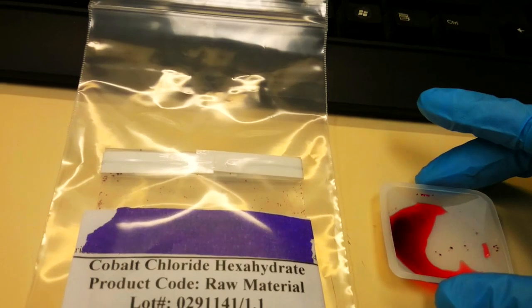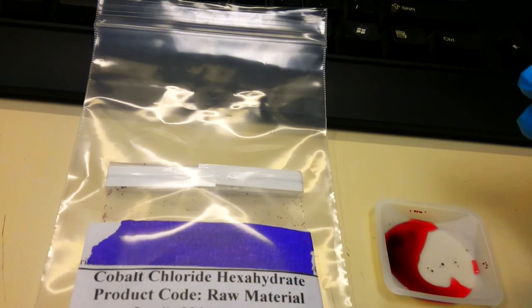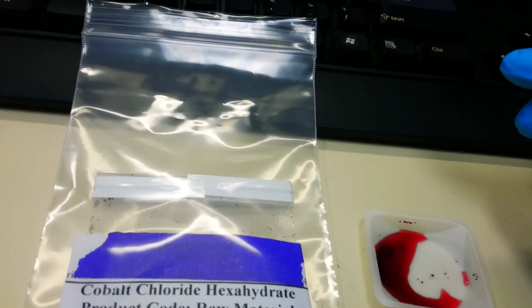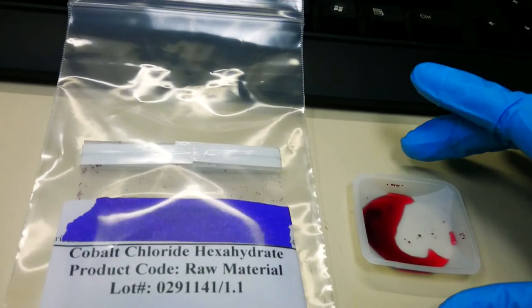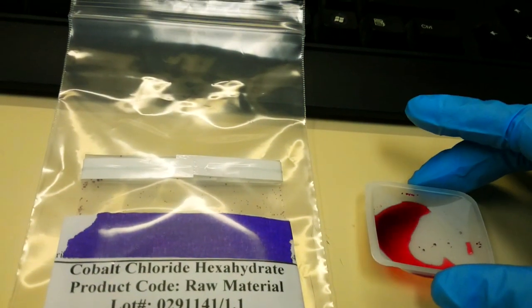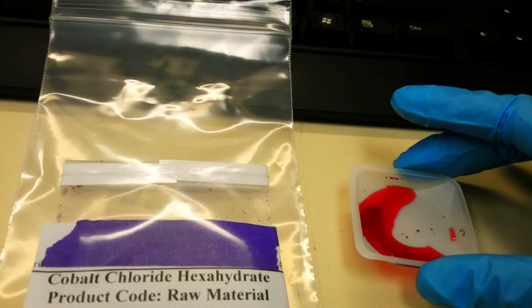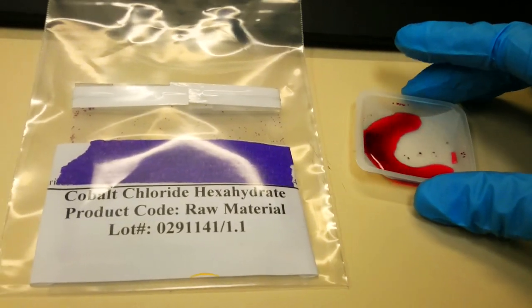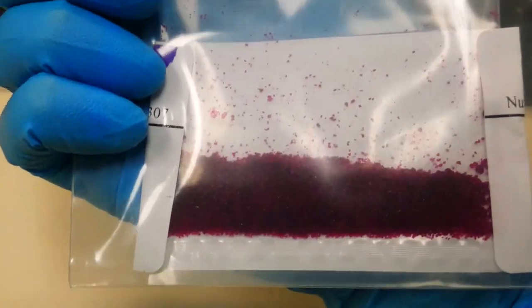So, cobalt chloride and cobalt chloride hexahydrate. From Wikipedia, it says that cobalt chloride is an inorganic compound of cobalt and chlorine. The hexahydrate is deep purple in color, whereas the anhydrous form is sky blue. I would still call it pink rather than deep purple, but that's okay.